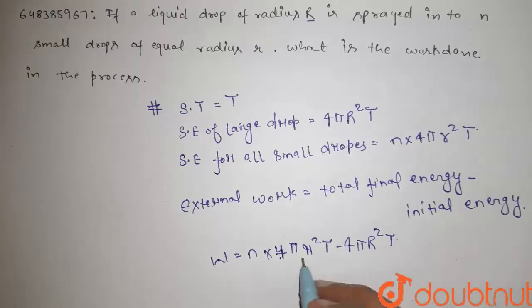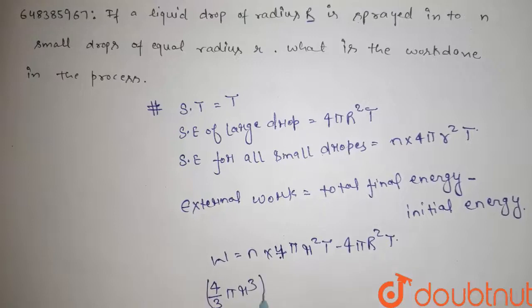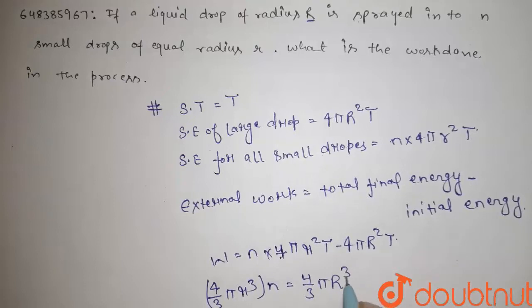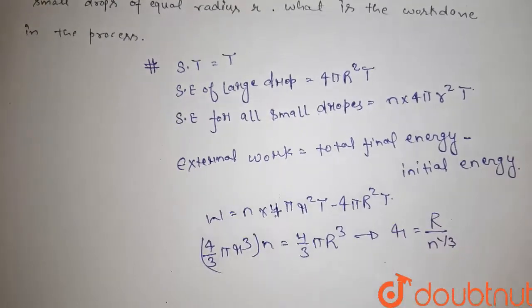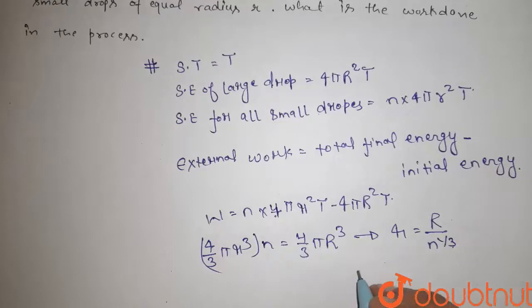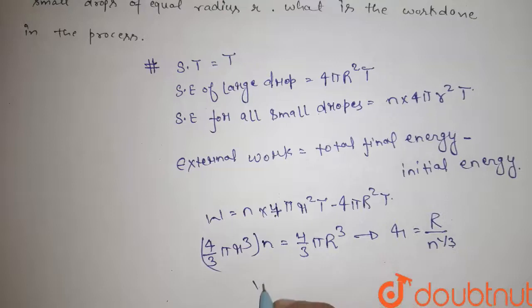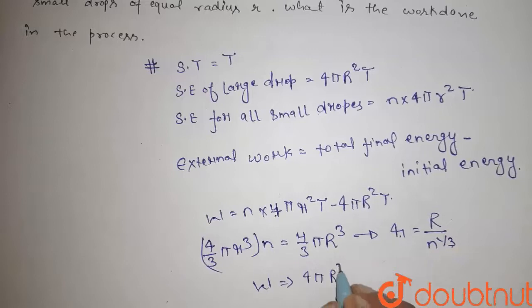Now, we need to calculate the relation between small radius r and capital radius R. The total volume of the liquid is constant before and after. So (4/3)πR³ equals n times (4/3)πr³, which gives R³ equals nr³.